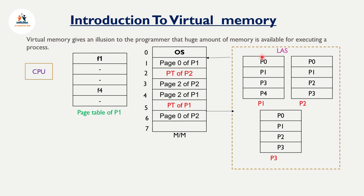Basically, in the logical address space, we divide the process into pages and store them. During execution, we load these pages into memory. We do not need to load the entire process — we only load some pages into main memory.